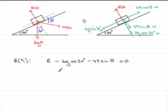So all I need to do is rearrange this, make R the subject. If I add 6g cos 30 to both sides, and also 49 sin θ to both sides, we've got what R is.